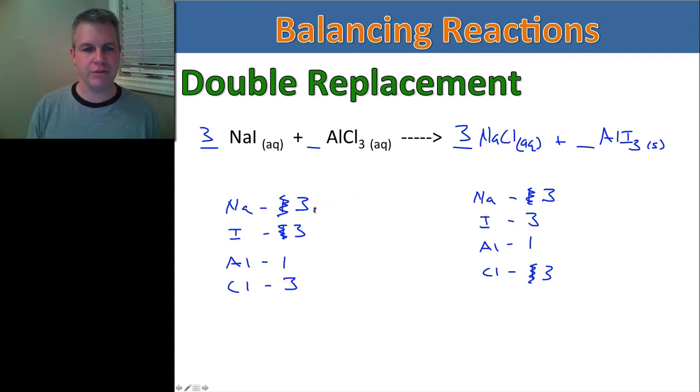So, I have three sodiums over there. So, let's just check our numbers. Three and three. Three and three. I have one and one aluminum. Three and three chlorines. So, now everything is balanced. And I don't have to worry about anything else. So, I have three, one, three, one. My equation is balanced.